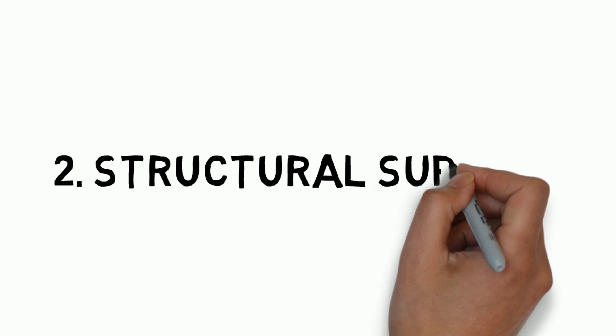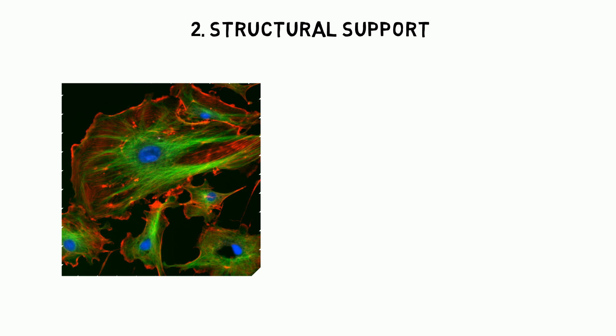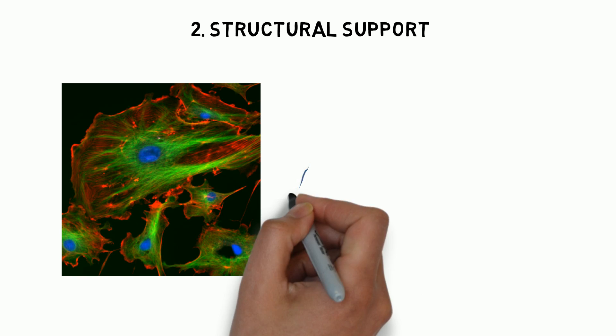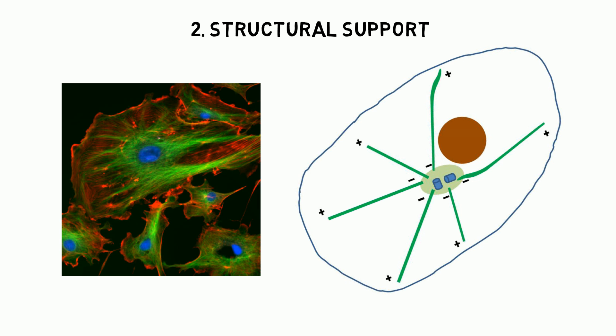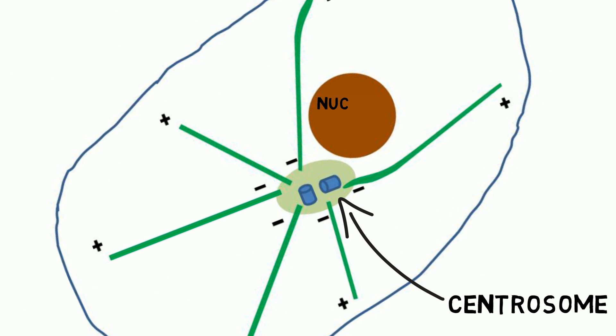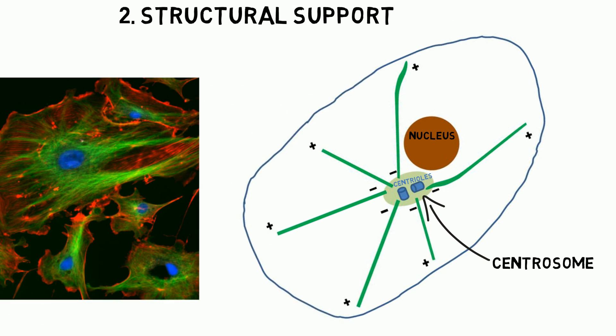The second function of microtubules is structural support. Don't the microtubules that are colored in green look as if they are helping the cell to maintain its shape? In cells, the minus end of microtubules are anchored in the centrosome, which is the microtubule organizing center. It is usually located adjacent to the nucleus and contains a pair of centrioles which are perpendicular to one another.